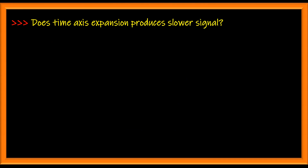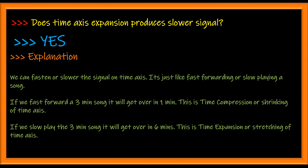Does time axis expansion produce a slower signal? Yes. When you expand a signal on the time axis, it is like taking a three-minute music track and extending it to six minutes. So this means you are playing the music slower than the original speed, which is a slow signal.